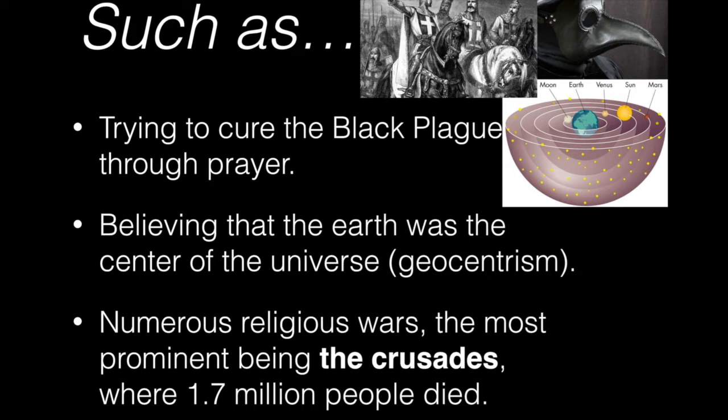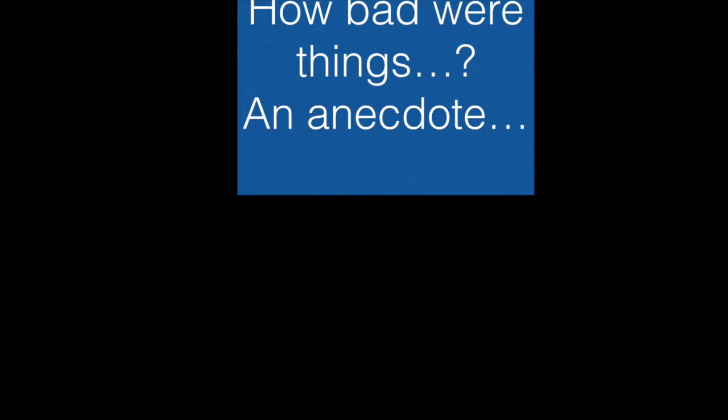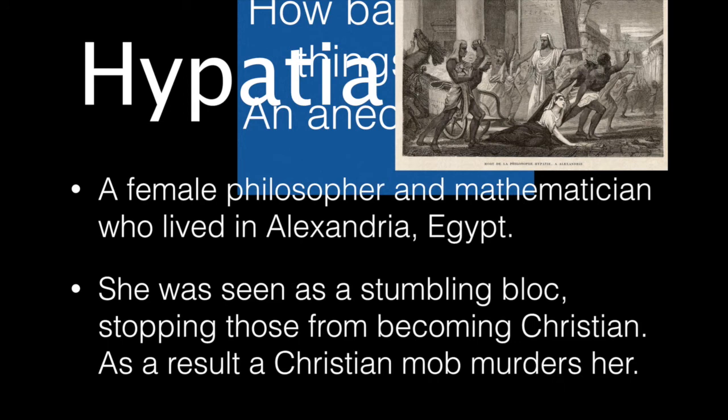To illustrate how bad things were during the Middle Ages: there was a philosopher and scholar called Hypatia. Her father was a professor, and in one of her writings she said something slightly anti-Christian. As a result, a mob came and killed her in broad daylight, and none of the mob faced any persecution or punishment. This gives you an idea of the threat scientists faced throughout the Middle Ages if they questioned anything about the church. But now, reaching the Renaissance and Reformation, things are beginning to change.